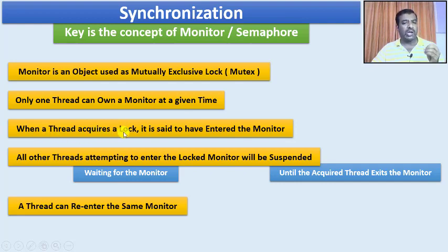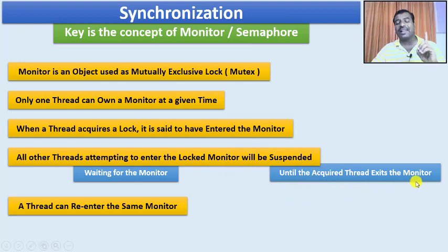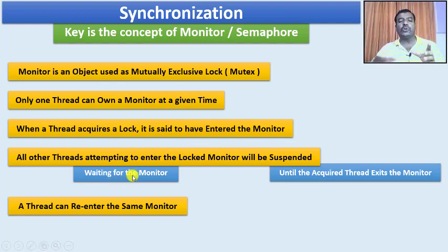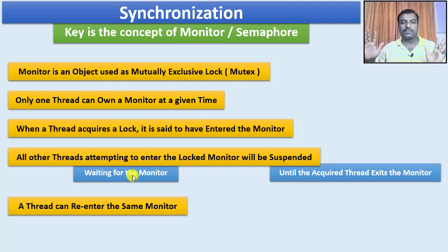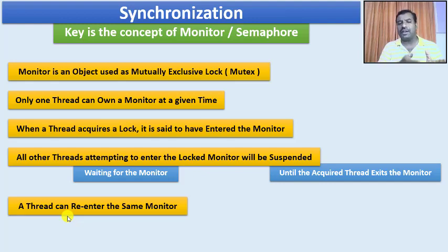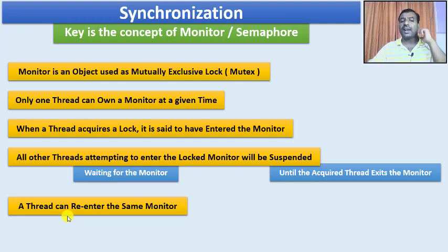Only one thread can own a monitor at a given time. When a thread acquires a lock, it is said to have entered the monitor. All threads attempting to enter the locked monitor will be suspended and must wait until the acquiring thread exits the monitor. Once a thread exits, any one of the waiting threads can acquire the monitor. Also, a thread that has exited the monitor can re-enter the monitor again whenever it requires.